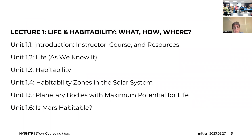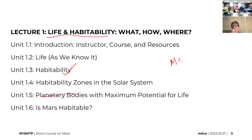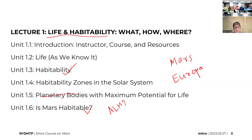In the last class, we tried to understand life and habitability — the definitions of habitability, habitable zones in the solar system, and the planetary bodies with the maximum potential for life: Mars, ocean worlds like Europa, Enceladus, Titan, and others. We also tried to understand whether Mars is habitable by looking at the Allen Hills meteorite ALH84001, which had microbe-like nano-scale structures, carbonate minerals, and magnetite.